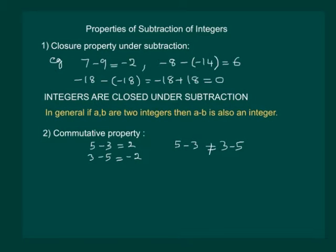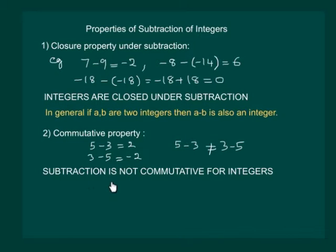So we can say that integers are not commutative under subtraction, or subtraction is not commutative for integers. And so we need not conclude any general statement for the commutative property of subtraction.